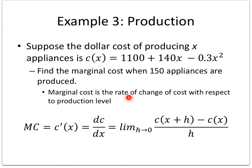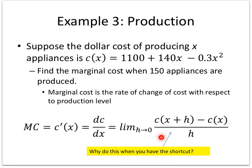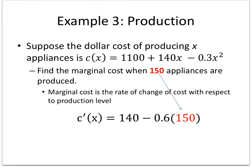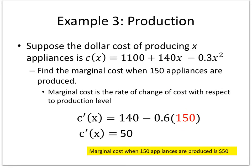To find marginal cost, I take the derivative. You should be using shortcuts at this point — not the limit definition. The derivative of the constant is 0, the derivative of 140x is 140, and 2 times 0.6x gives 1.2x. So find the marginal cost when 150 are produced: plug in 150 and get $50, meaning to make one more appliance costs approximately $50.